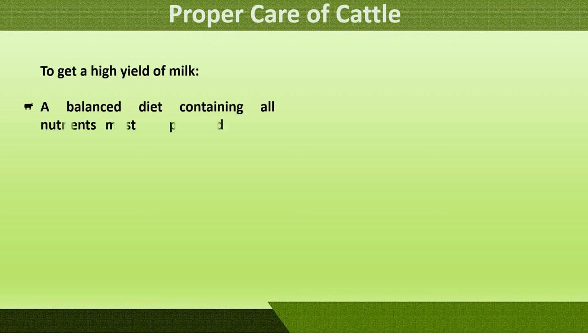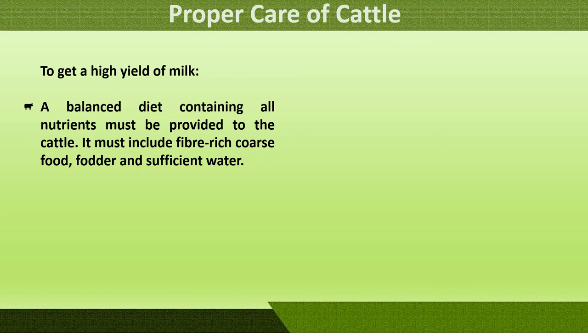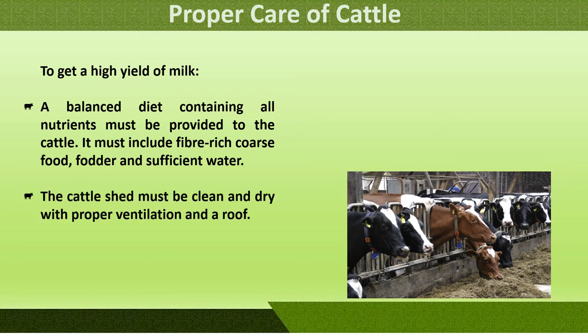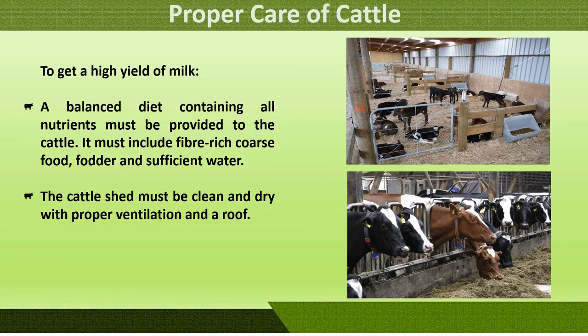To practice animal husbandry properly, proper care of cattle is essential. To get a high yield of milk, a balanced diet containing all nutrients must be provided, including fibre-rich coarse food, fodder, and sufficient water. The cattle shed must be clean, dry, with proper ventilation and a roof. Cattle should be regularly vaccinated to ensure they are disease-free, as they live close together and disease can spread quickly.